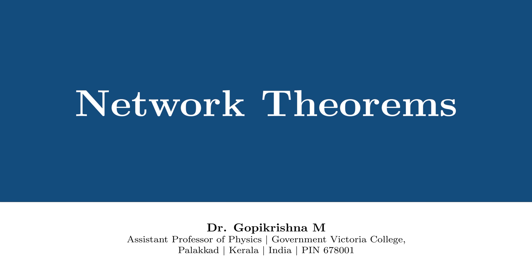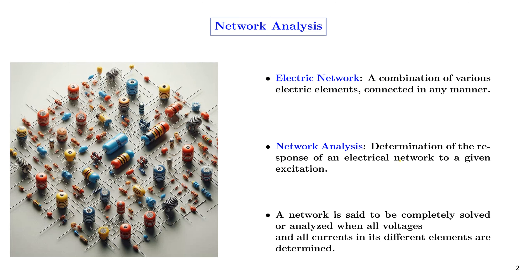Network Theorems. An electric network is a combination of various electric elements such as a resistor, capacitor, inductor, diode, etc., which are connected in any manner. A schematic of an electric network is shown in this figure. Electrical network analysis is a foundational concept in electrical engineering that involves applying mathematical methods to determine the current, voltage, and power parameters in various components of an electrical network.